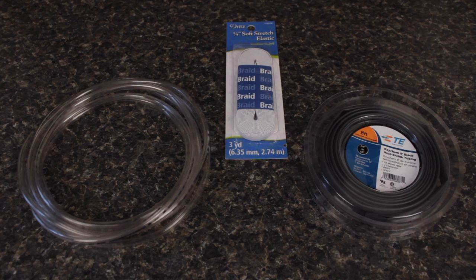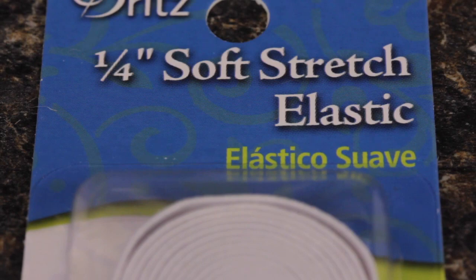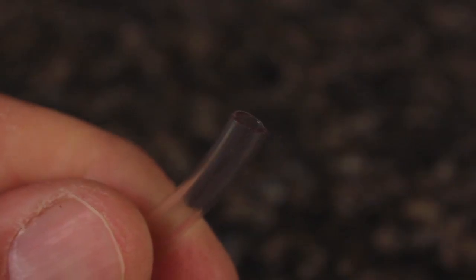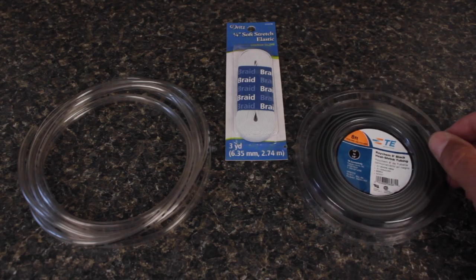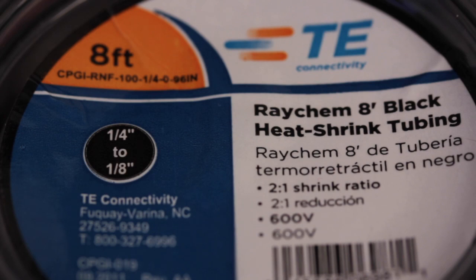They use just a few readily available, cheap materials: quarter-inch stretch elastic braid, clear plastic tubing which you can get at most hardware stores—three-sixteenths of an inch outside diameter with an eighth inch internal diameter works well—and heat shrink tubing, the quarter-inch stuff that shrinks to an eighth of an inch.